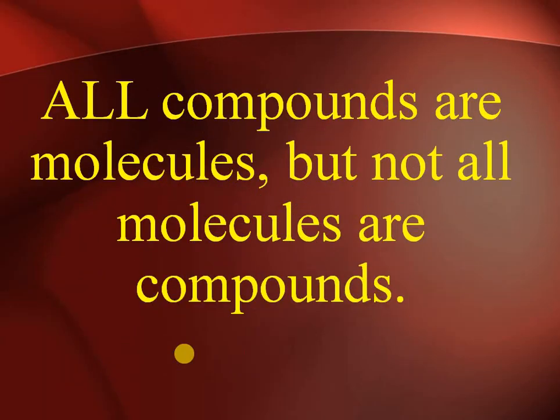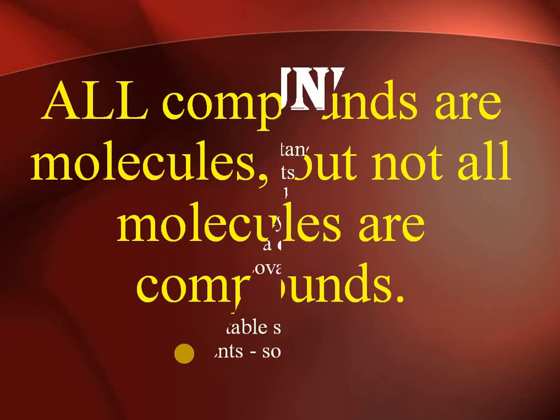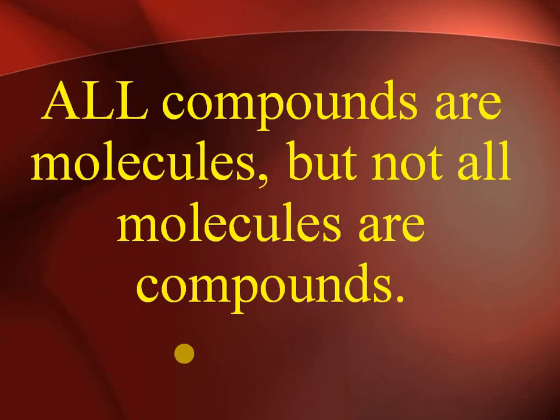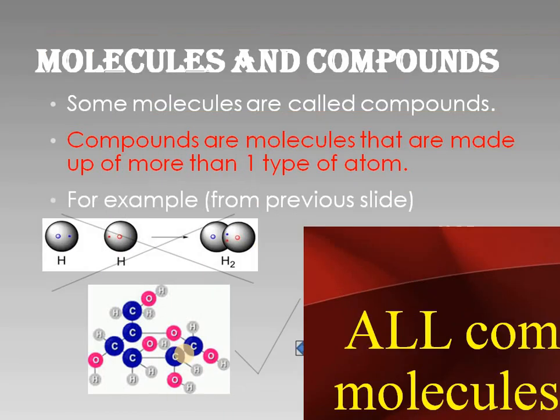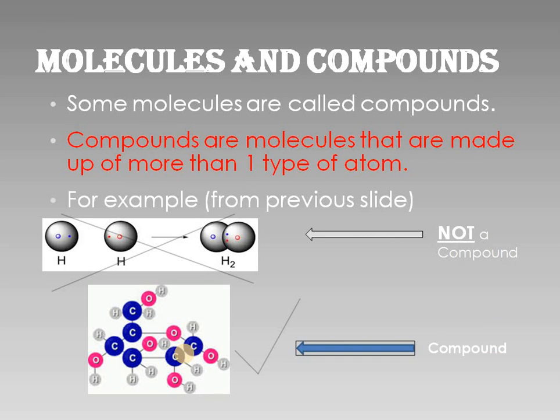So we come to a point that all compounds are molecules, but all molecules are not compounds. For example, H₂ is a molecule but it consists of only one element, so it will not be considered a compound — a compound must consist of more than one type of element.